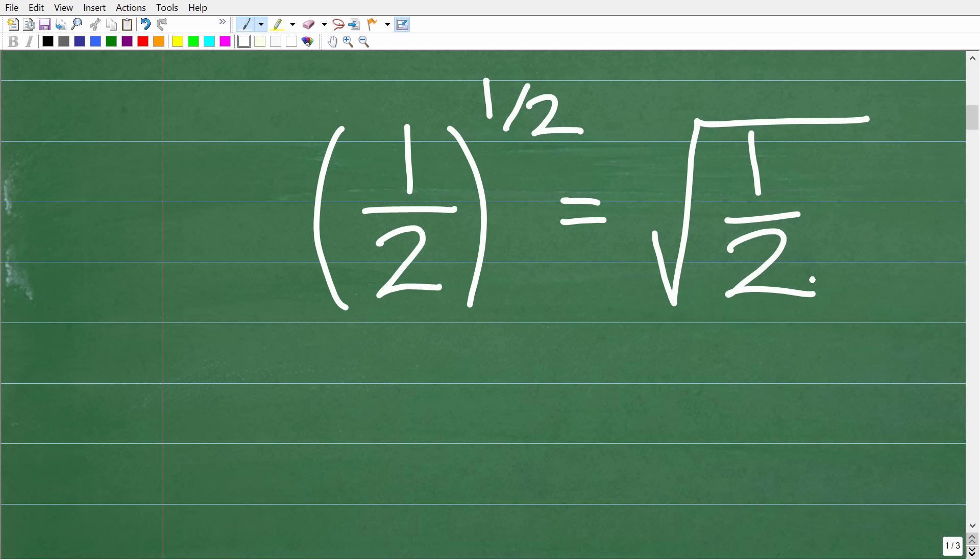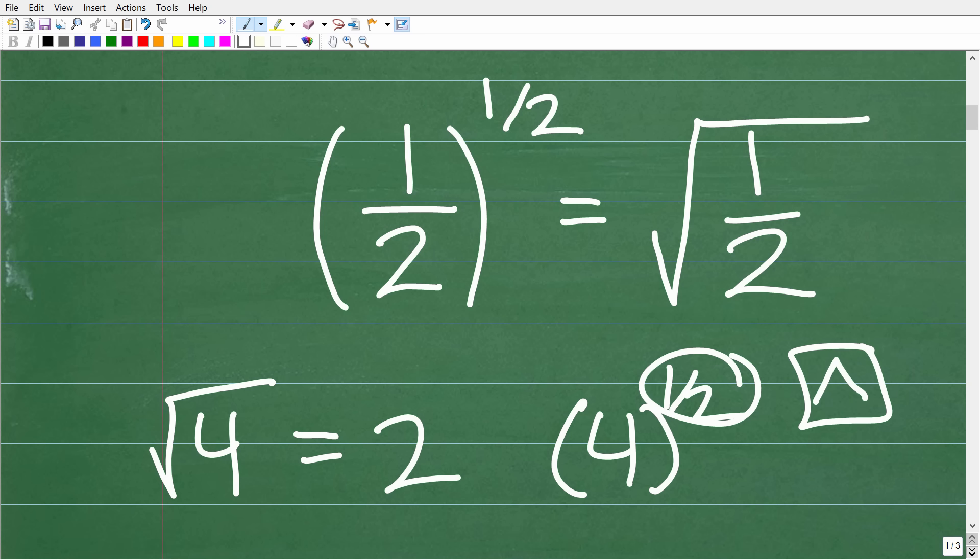Now if you have your calculator handy—again, we're not going to do this with a calculator—we know that the square root of four is two. But you can also go into your calculator just to believe what I'm telling you. Take four to the one half power. To plug an exponent in on your calculator, you're going to be looking for this key which is called a caret key.